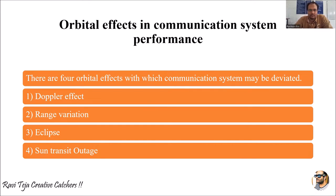Welcome to the course on satellite communications. In today's class we are going to learn about orbital effects in communication system performance. There are four main orbital effects we are considering: the first one is Doppler effect, the second one is range variation, the third one is eclipse, and the fourth one is sun transit outage.